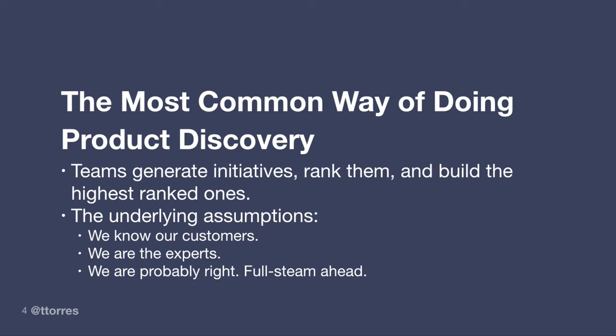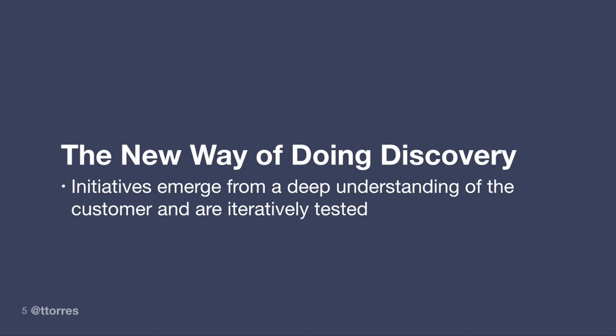This model is starting to break down, and as a result, some of the best product teams are starting to work in a new way. Rather than sitting around inside the building collecting ideas and assuming the knowledge is within the building, these teams are going out and immersing themselves in their customer's world. They're actively working to develop a deep understanding of their customer — what their needs are and the context in which those needs occur. Through this deep understanding, ideas emerge. They're not sitting in a room asking what can we build tomorrow — they're out in the world talking to customers, hearing problems, and that's triggering ideas.